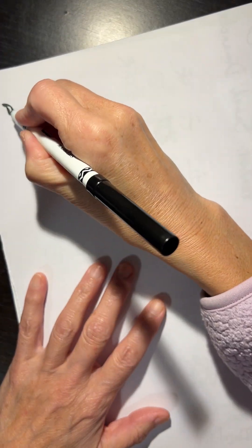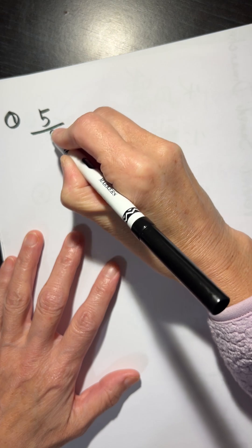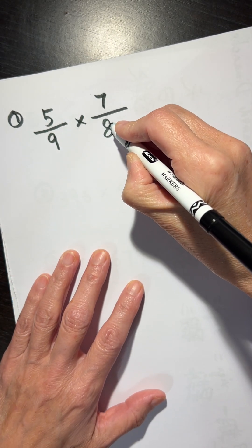Okay, multiplication of a fraction. First, 5 over 9 times 7 over 8.